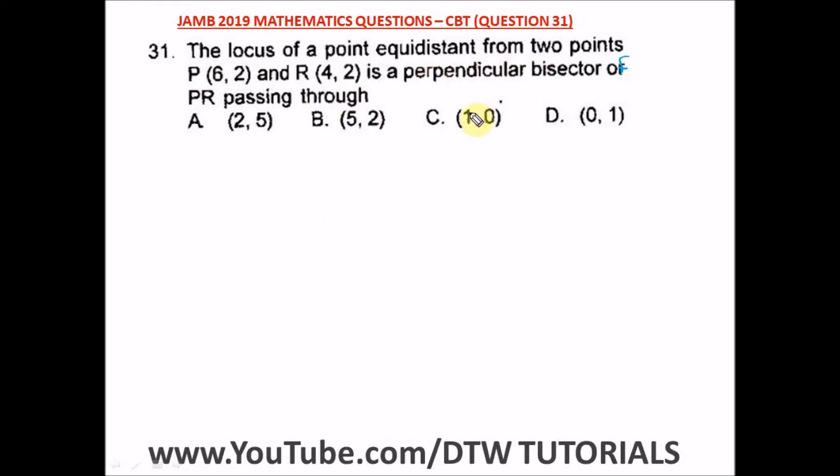The locus of a point equidistant from two points, let's say this point P and R, it's a perpendicular bisector. That's the locus. Perpendicular means right angle triangle and it's equidistant from these two points, that's the same distance, where P is 6 comma 2 and R is 4 comma 2. So these are locus. We should find that point.